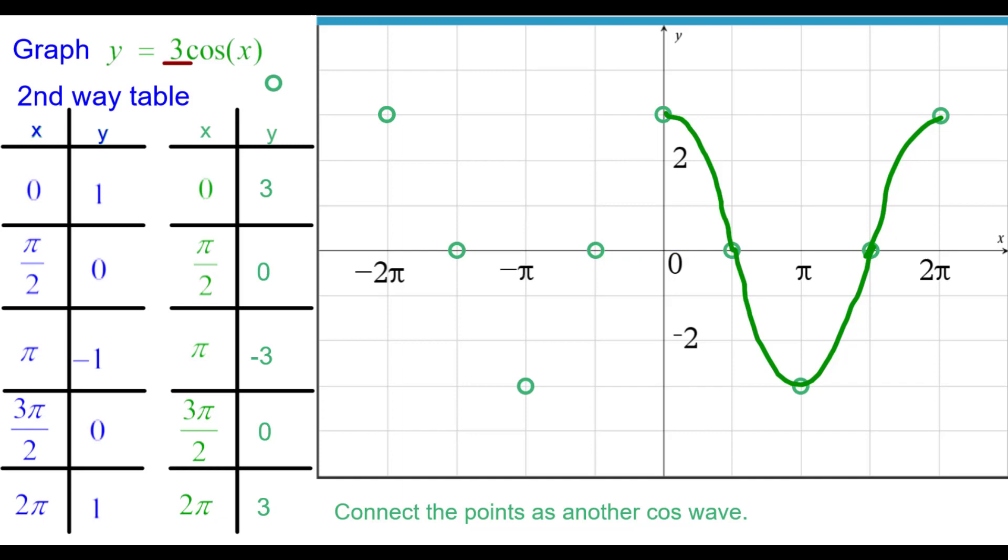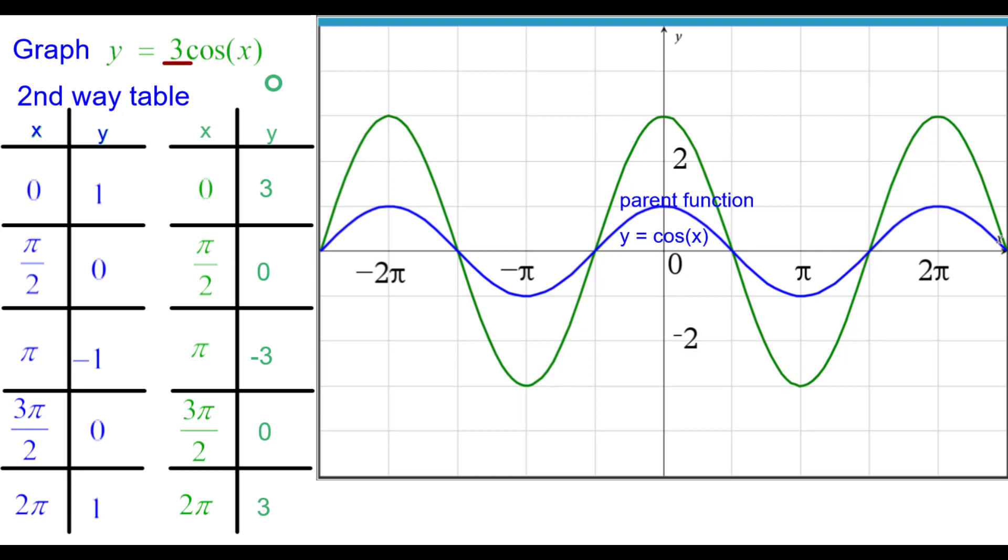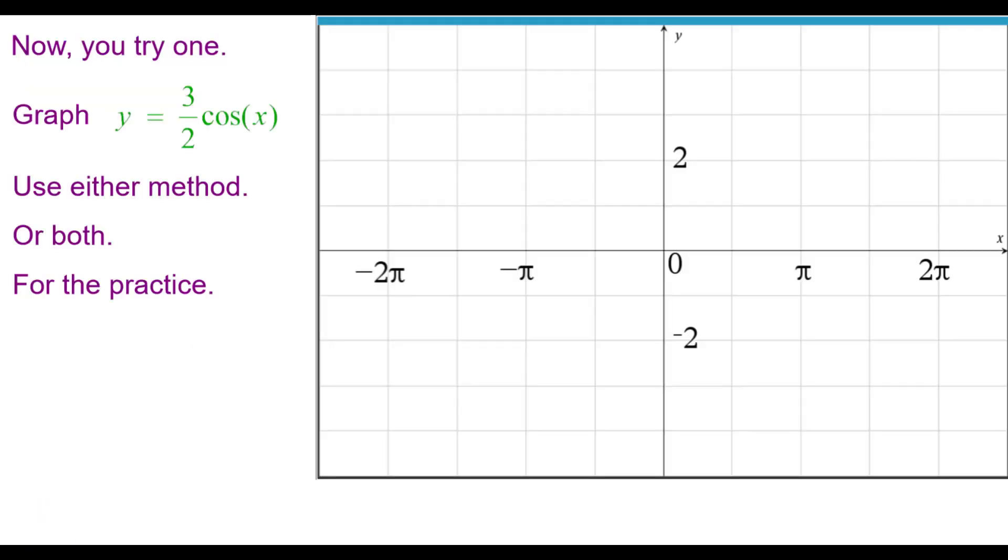Again, connect the points as a cosine wave. Concave down. Concave up. Concave down. And comparing it to the parent function. Now you try one. Graph y equals 3 halves times the cosine of x. Use either method or both for the practice. We'd also like you to say what is the amplitude of this curve.